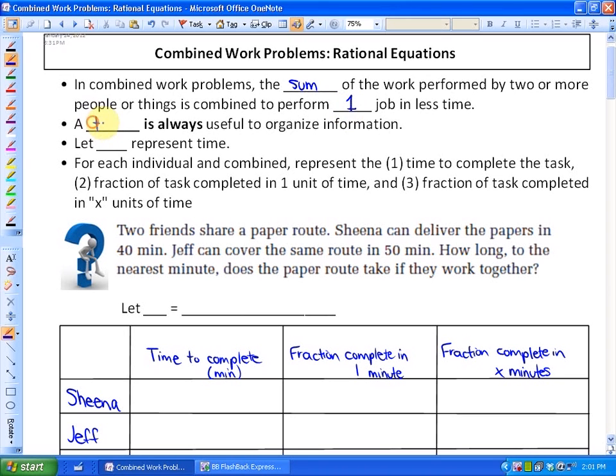A table is always useful to organize information in these types of problems. Let x represent time. For each individual and combined, represent the time to complete the task, the fraction of the task completed in one unit of time, and the fraction of the task completed in x units of time. That's going to help us create our equation.